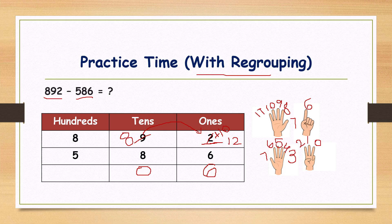Next in the hundreds place, what are the numbers? Eight and five. Keep it in your mind: eight and open five fingers, going backward — eight, seven, six, five, four, three. What is the answer? Three. What is the final answer? Three hundred and six.